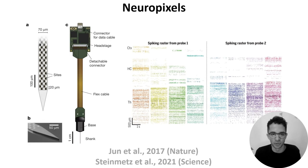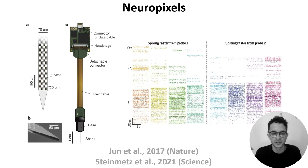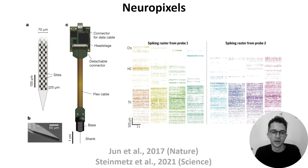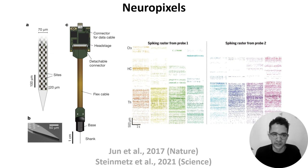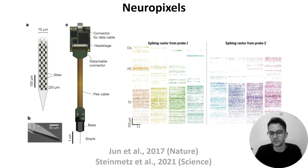One approach is to use high-density probes, like the Neuropixels probe shown in panel C. The main part of this probe is its extremely thin shank, which is inserted into the brain surgically, and is covered with hundreds of recording sites, shown schematically in panel A and in a microscope image in panel B. These sites record nearby electrical activity, so each site's signal results from the combined activity of many neurons. However, from this data it's possible to infer the underlying spiking activity of individual neurons by using spike sorting algorithms, which make use of the fact that different neurons have distinct spike shapes and a few other features. These probes allow you to record activity from hundreds to thousands of neurons simultaneously.